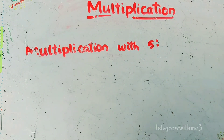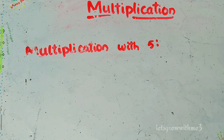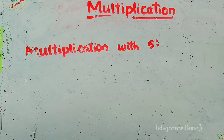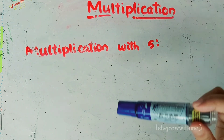When we are done, we will show the shortcut methods. Let's start the multiplication with 5.